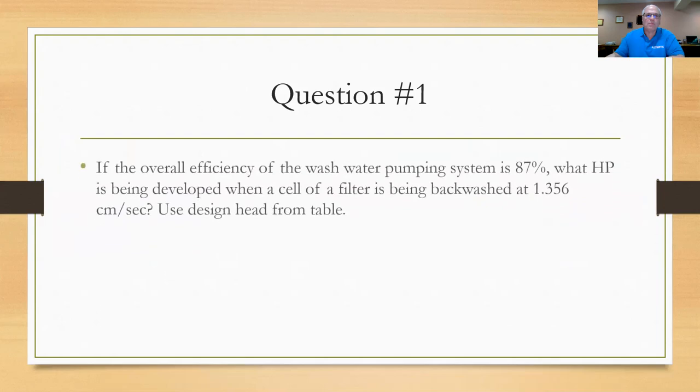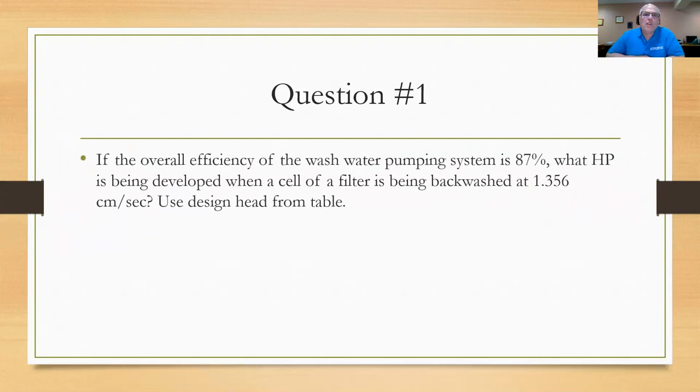So with that information, let's go ahead and try some of these questions. See how you do on the math today. Question number one: If the overall efficiency of the wash water pumping system is 87 percent, what horsepower is being developed when a cell of a filter is being backwashed at 1.356 centimeters per second? Use design head from the table. If you want to work this problem, you might want to pause the video now.